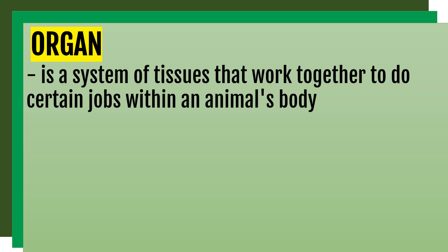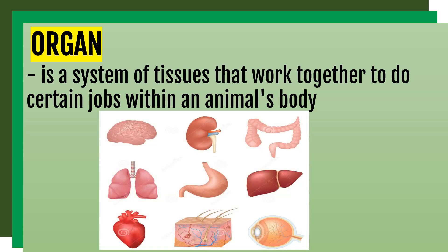Next is organ. An organ is a group of tissues that work together to do certain jobs within an animal's body. Examples of organs include the brain, kidney, large intestine, lungs, stomach, liver, heart, skin, and eye.